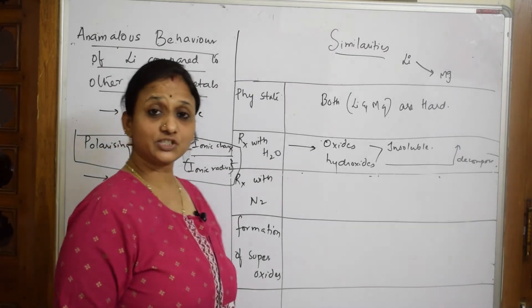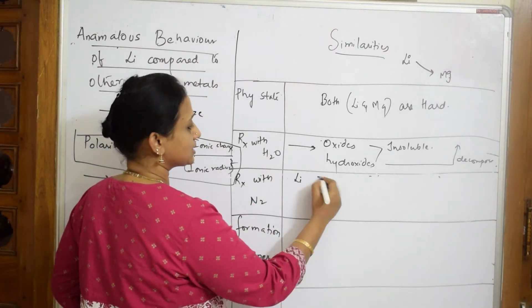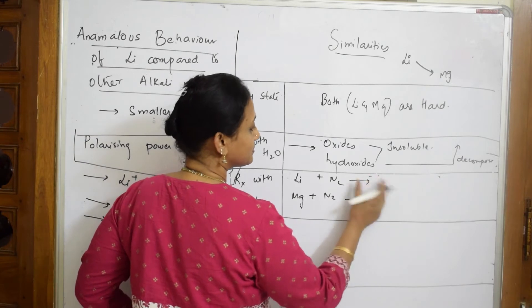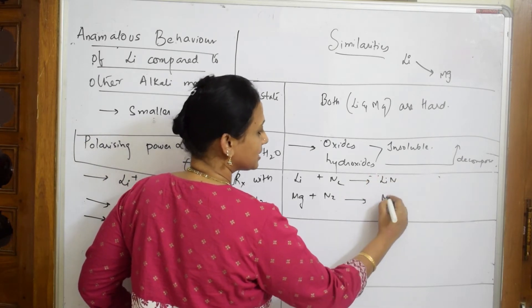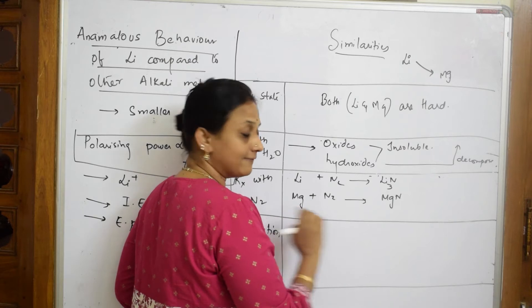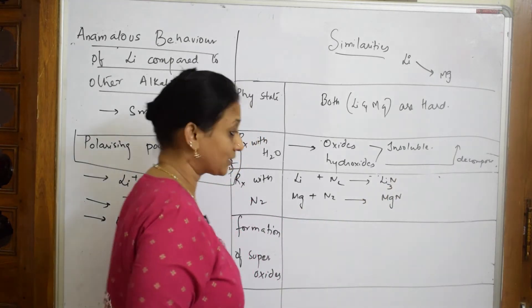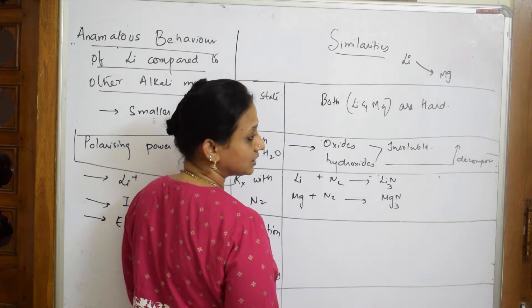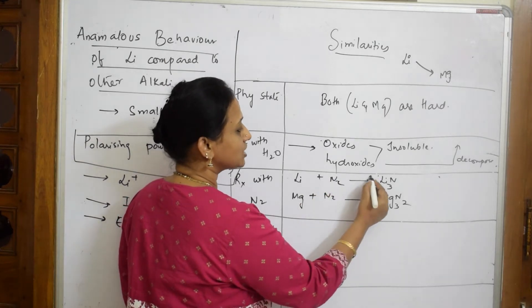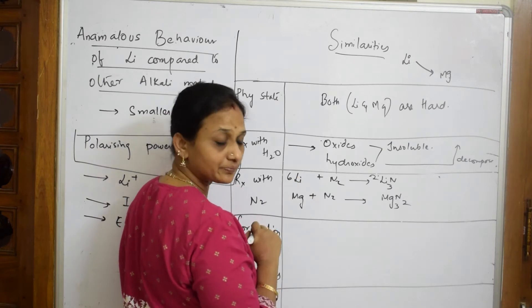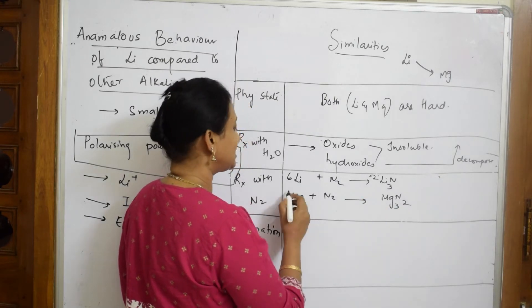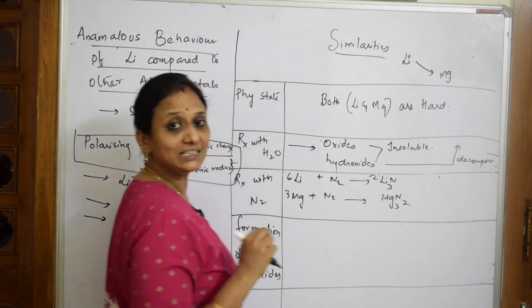Regarding reaction with nitrogen: lithium reacts with nitrogen, and so does magnesium. For lithium nitride, the valency of nitrogen is 3 and lithium is +1, giving Li₃N — balancing gives 6 lithiums and 2 nitrogens. For magnesium nitride, magnesium valency is +2 and nitrogen is 3, giving Mg₃N₂.